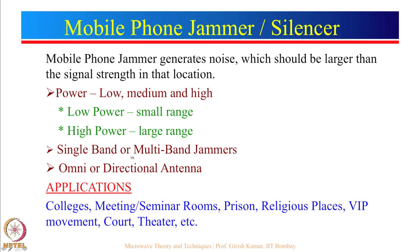Jammers can be single-band or multi-band — either jamming only one particular band or multiple bands. Antennas can be of two types: omnidirectional, which radiates equally in the horizontal direction forming a figure-of-8 pattern in the vertical direction, and directional antennas which send signal in a particular direction. Applications for mobile phone jammers include prisons, where prisoners smuggle in mobile phones and do anti-social activities, so jammers need to be installed there.